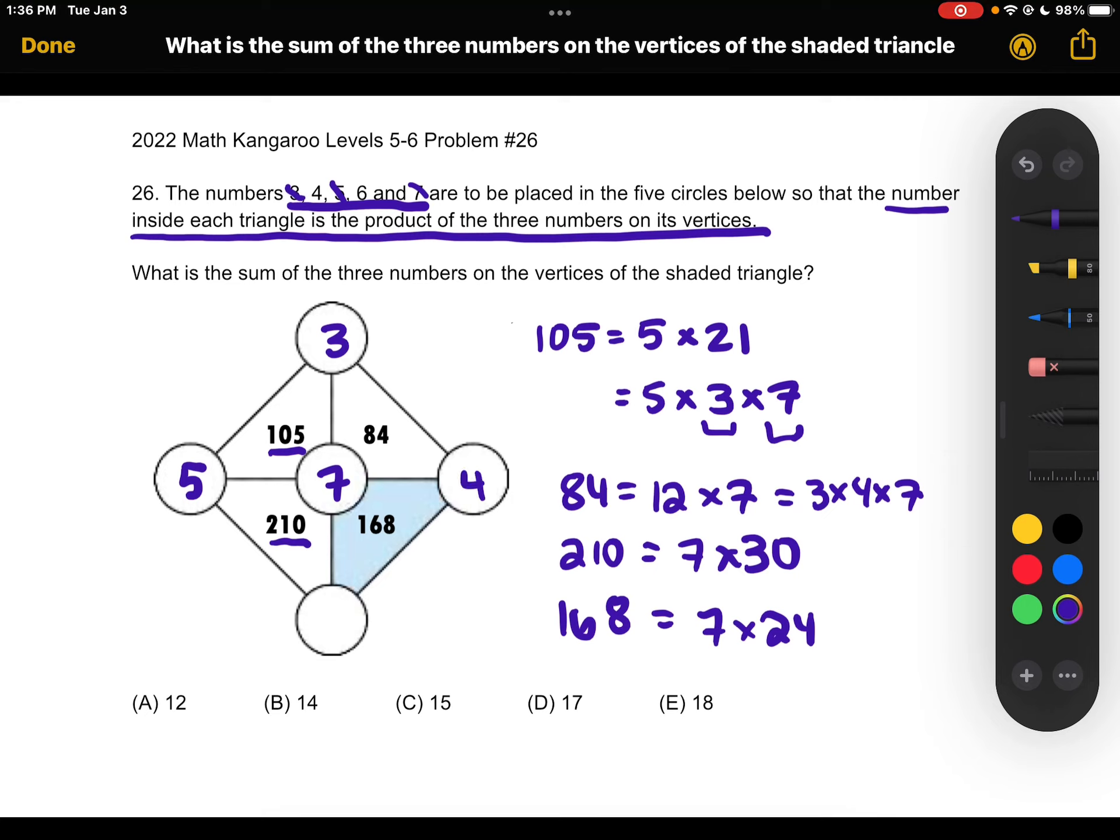And then the remaining number must be 6. And we can double-check that, because we have 168 is equal to 7 times 24, which is equal to 4 times 6, because that's 24 times 7.